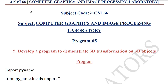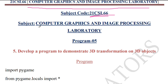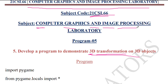Hello everyone, welcome back to another exciting episode of the Computer Graphics and Image Processing Laboratory series for course 21CSL66. Today we'll be exploring the fascinating world of 3D dimensional transformation and their application to 3D objects, which is particularly relevant for VTU sixth semester students. A 3D transformation is a geometric operation that modifies the position, orientation, or scale of a 3D object in a virtual environment. These transformations play a crucial role in computer graphics, allowing us to visualize 3D models in various contexts such as video games, CAD, and scientific simulation.